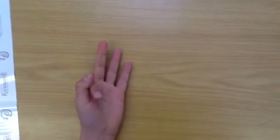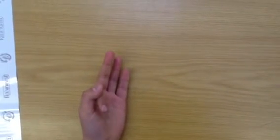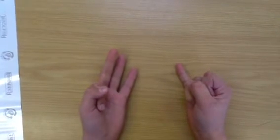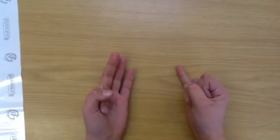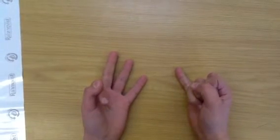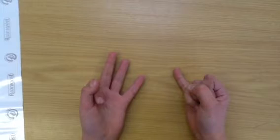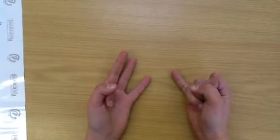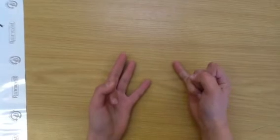You show 8 like this and 6 like that. Every finger you've pulled down is worth 5, and every finger that's up equals 1. So 5 plus 3 is 8, and 5 plus 1 is 6.